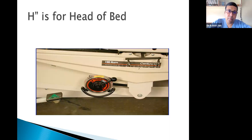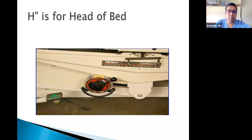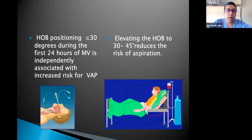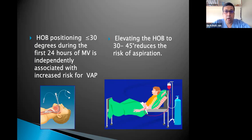H is for Head-end of bed elevation. With motorized beds we can monitor the angle. It has been found that keeping the head end less than 30 degrees during the first 24 hours of mechanical ventilation is independently associated with increased risk of ventilator-associated pneumonia. The head end must be at least 30 degrees, ideally between 30 to 45 degrees, to reduce risk of aspiration and pneumonia.